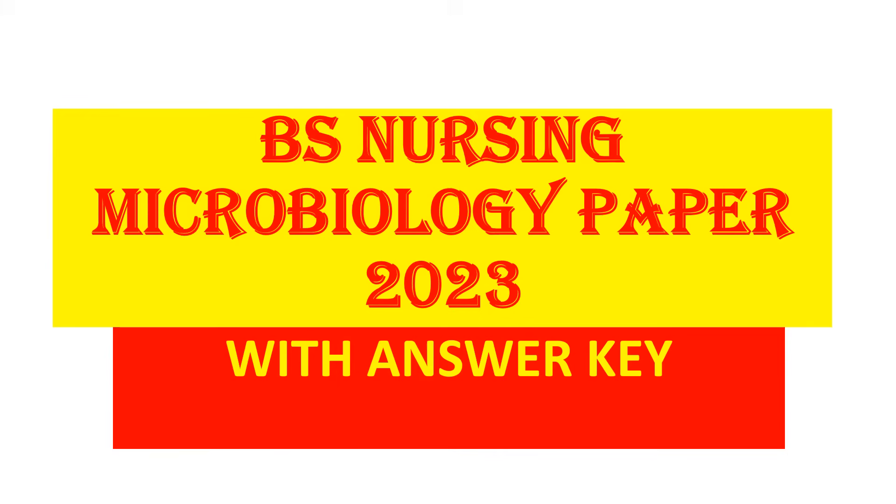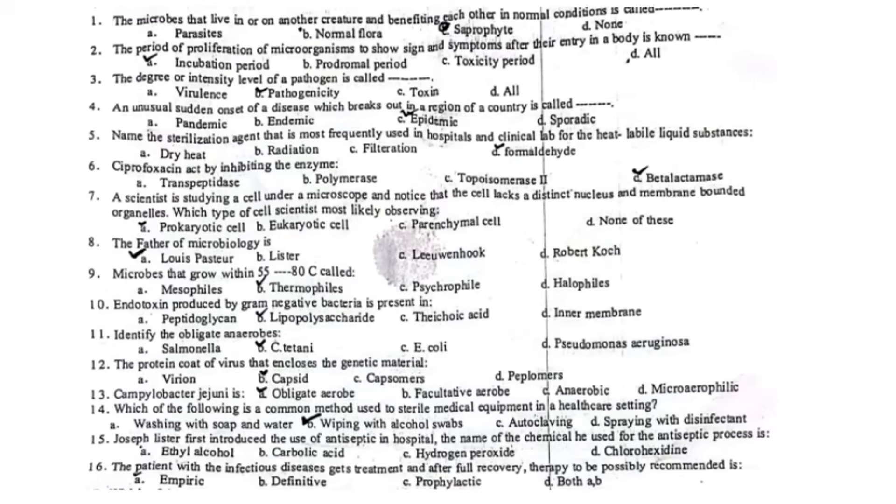This is the microbiology paper 2023. In this lecture, we will discuss the paper with answers and explanations. Question number one: The microbe that lives in or on another creature and benefits each other in normal conditions. This question is taken from the definitions and terminology.